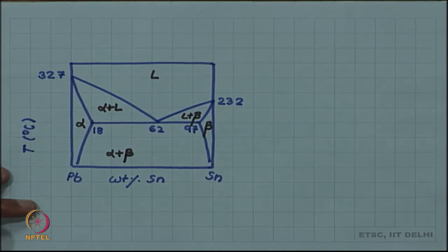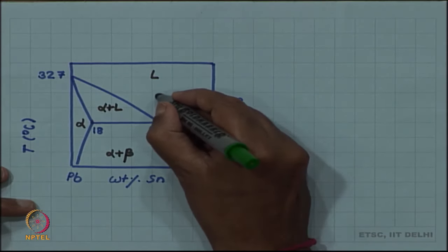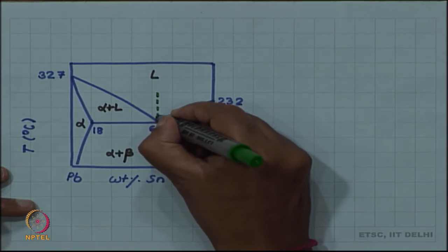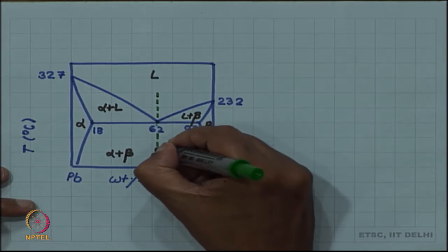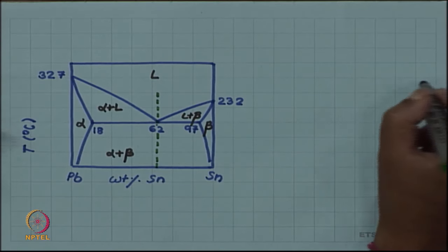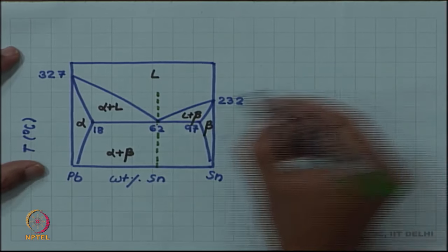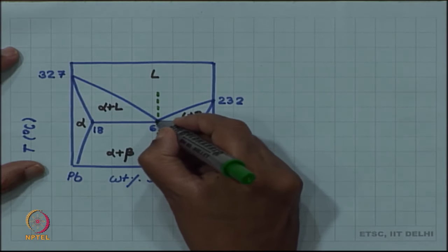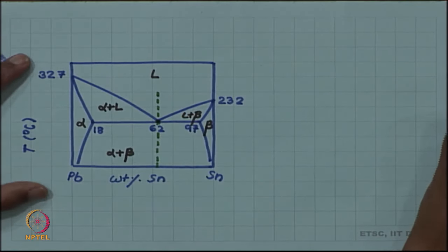We also talked about that this 62 weight percent alloy is a very special alloy because it melts at the lowest melting point. That is why it is called a eutectic alloy, an easy melting alloy.